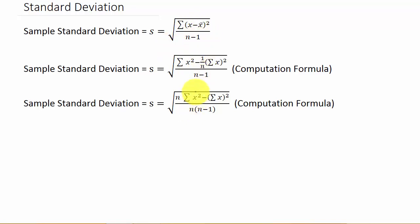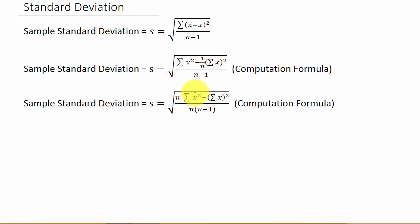But notice these other two formulas — these are the computation formulas. We have these because it's easier to calculate using one of them. This is a computation formula out of one textbook, and this is a computation formula out of a different textbook. I've looked in another textbook and it had a computation formula different than both of these. So whatever formula your book has, that's the one you should use.